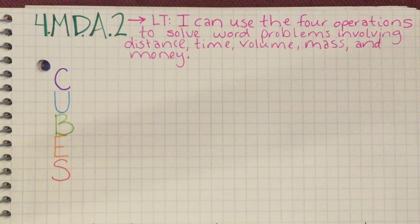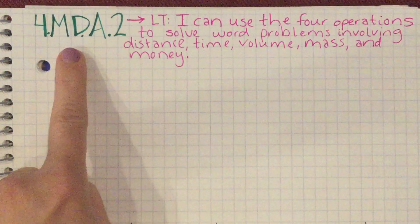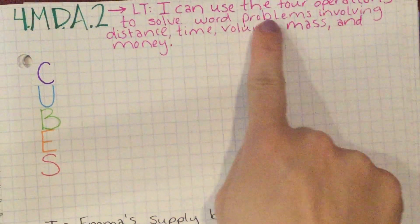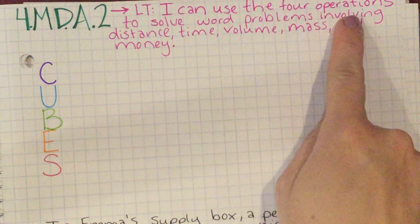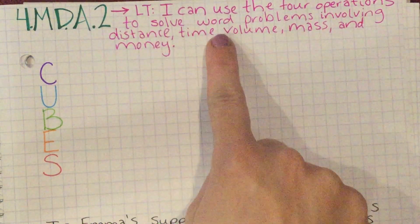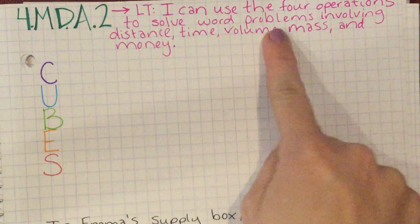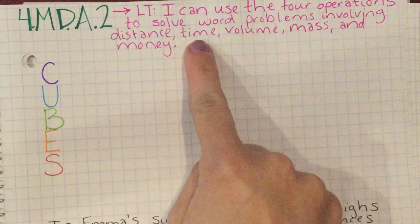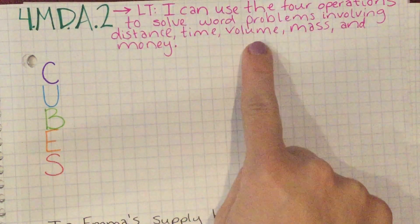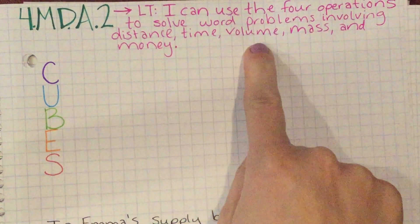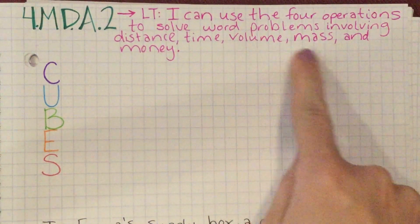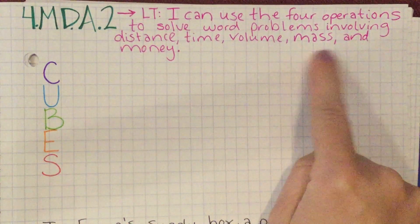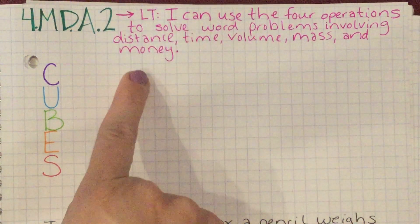The target that we're going to be meeting within that standard is: I can use the four operations to solve word problems involving distance, time, volume — that's liquid volume — mass — the mass of objects — and money.